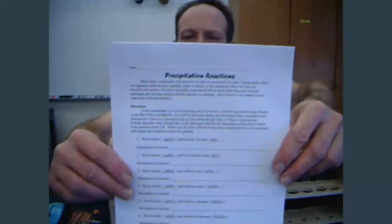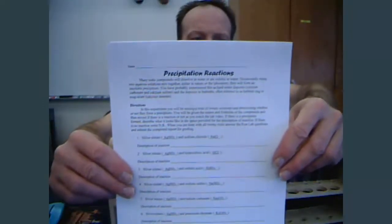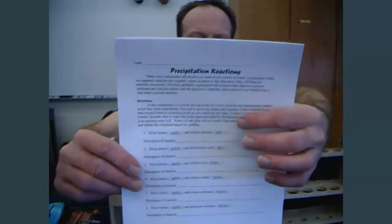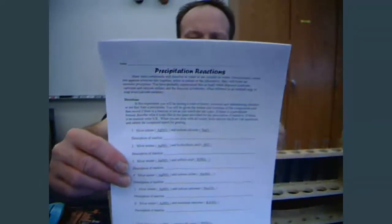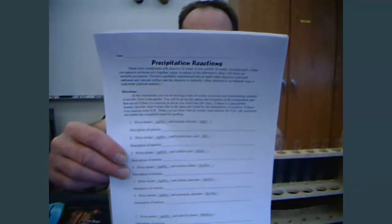You're going to want to use solubility rules in order to figure out what the products are. Make sure that you download the precipitation reaction lab. You'll notice that I already filled in the formulas of each of the nine different compounds that we're going to be mixing together today to see if there is a reaction or not.